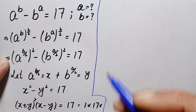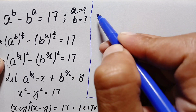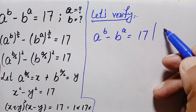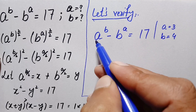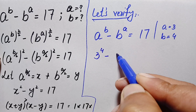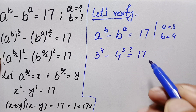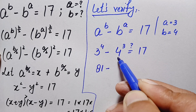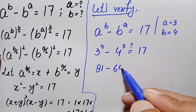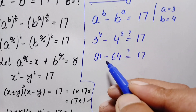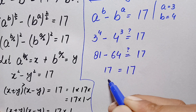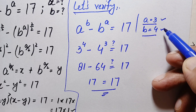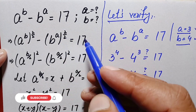To verify, we substitute a = 3 and b = 4 back into the original problem: a^b minus b^a equals 17. This becomes 3^4 minus 4^3. Now 3^4 is 3×3×3×3 = 81, and 4^3 is 4×4×4 = 64. So 81 minus 64 equals 17. Since both sides are equal, a = 3 and b = 4 are confirmed as the correct solutions to this beautiful exponential math problem.